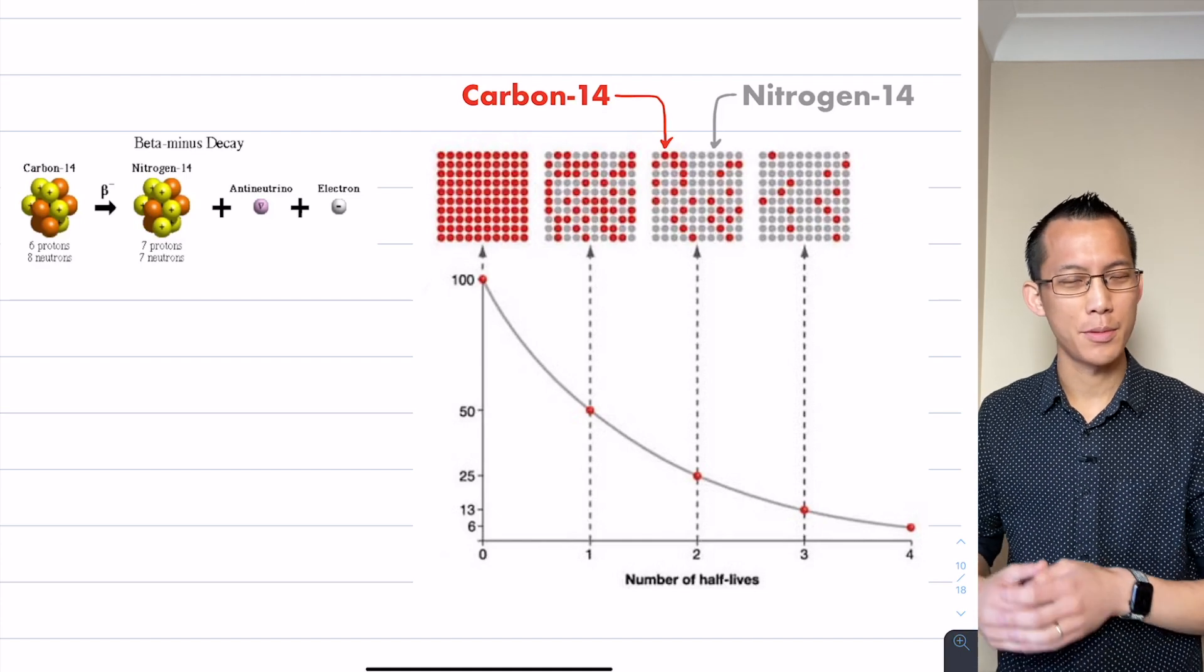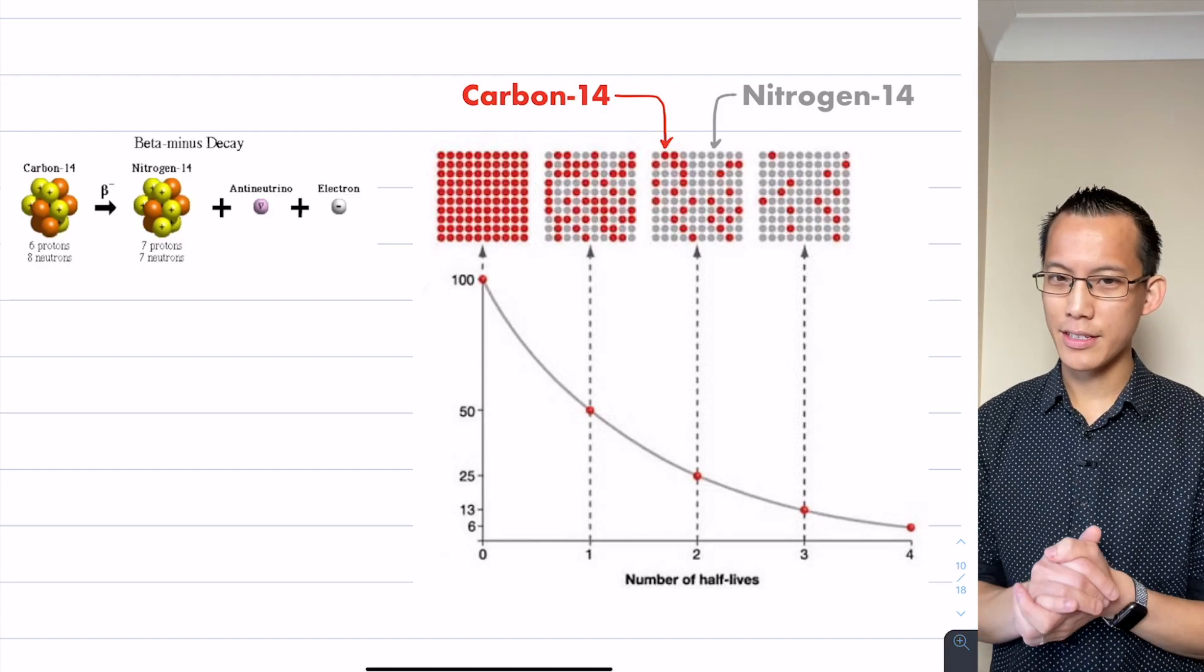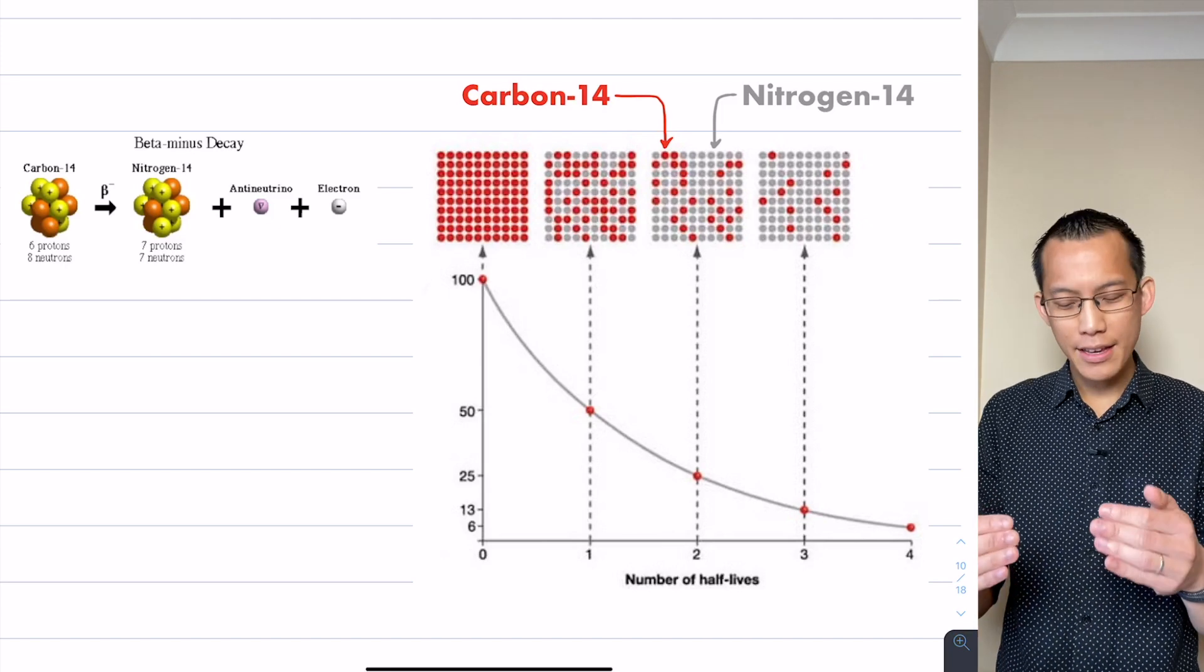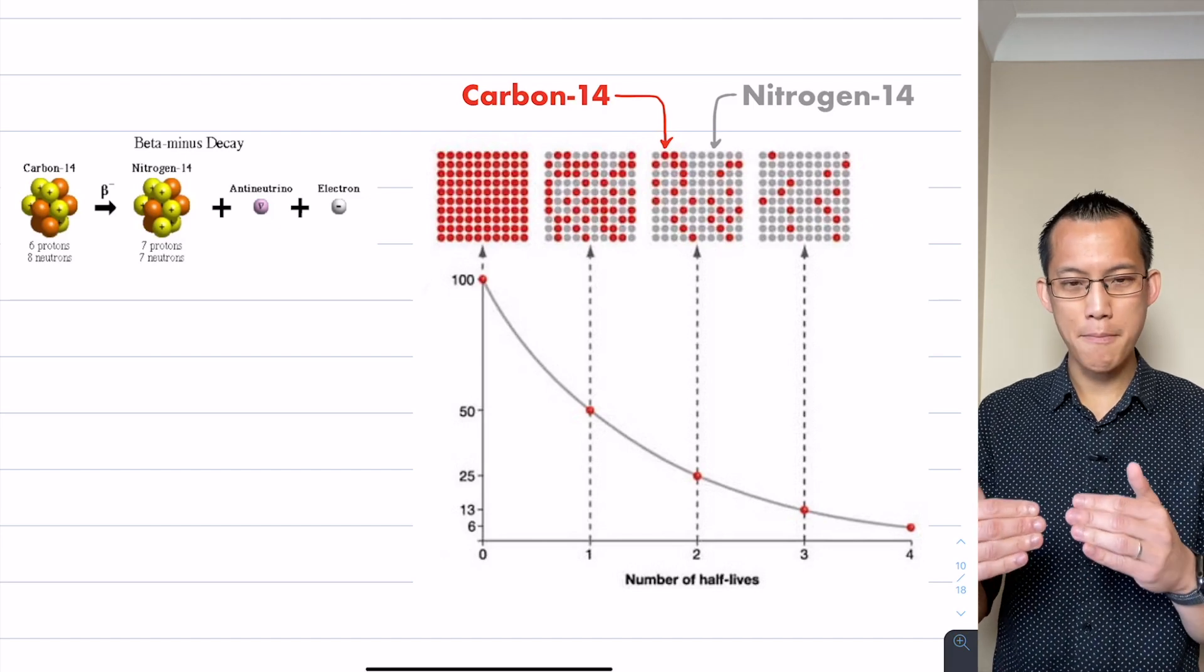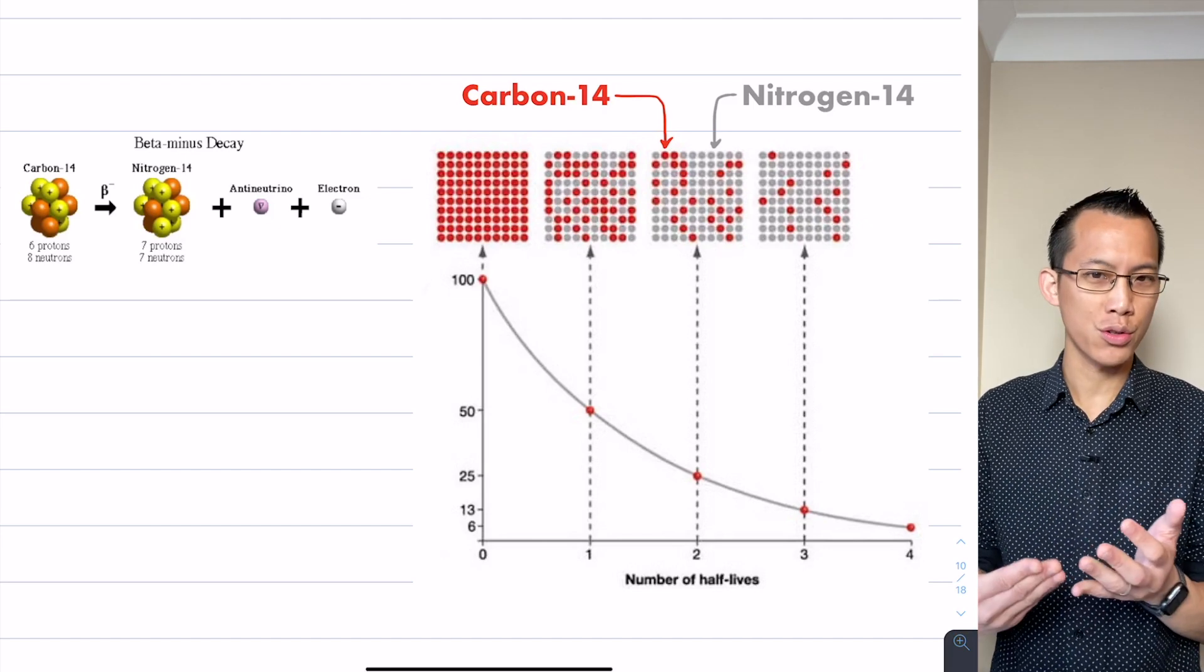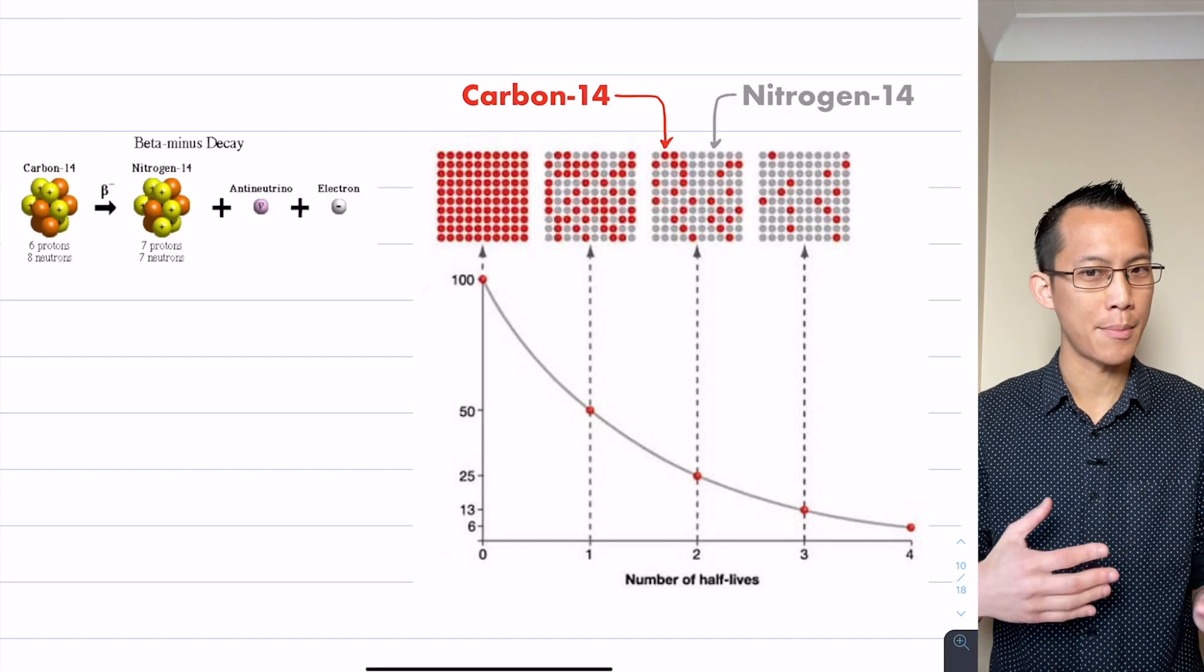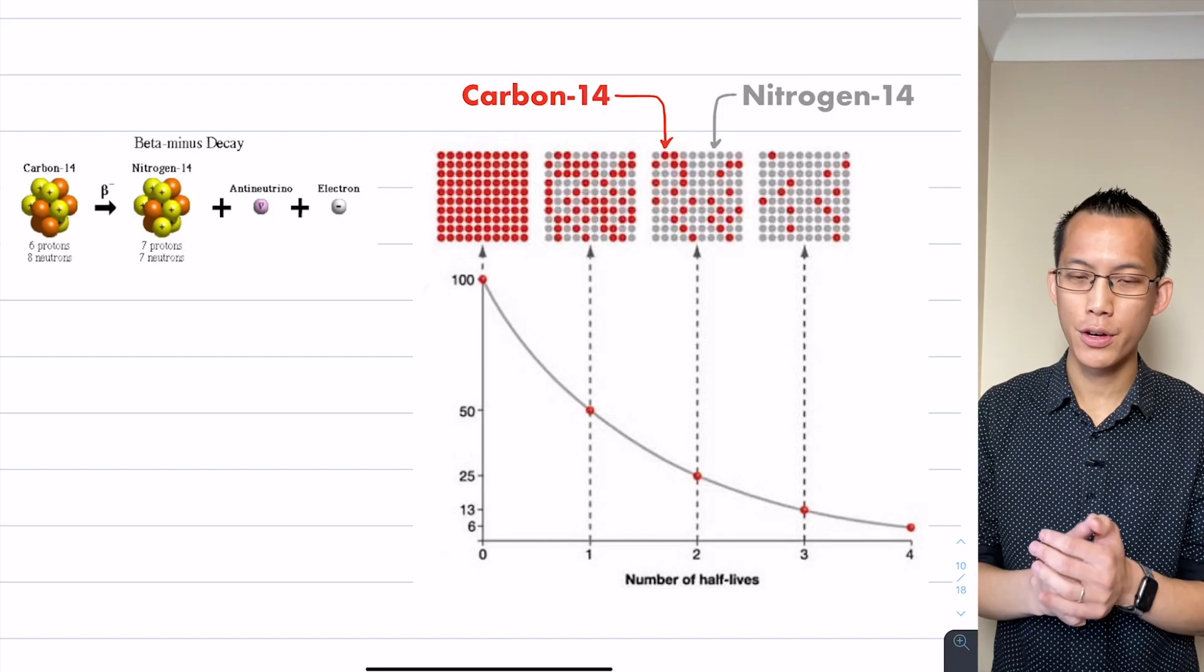Carbon-14 is an unstable isotope, so over time it decays into nitrogen-14. As the quantity of carbon-14 reduces, the rate of change also reduces because you've got less carbon-14 to decay.